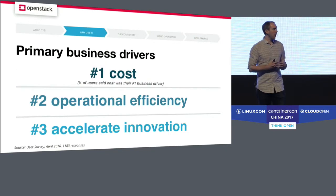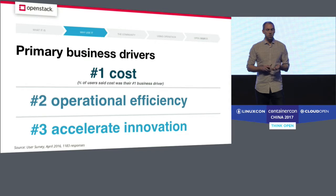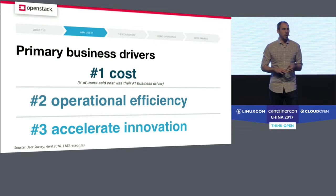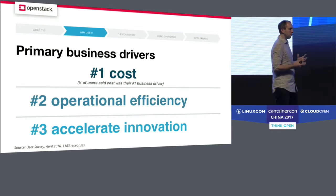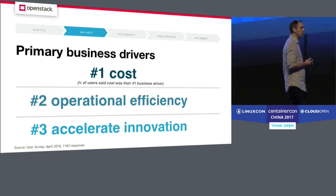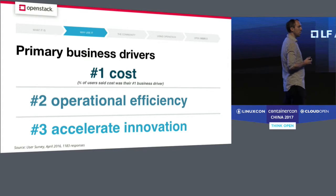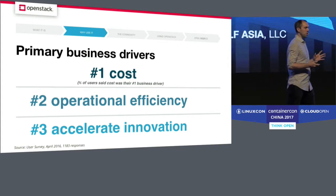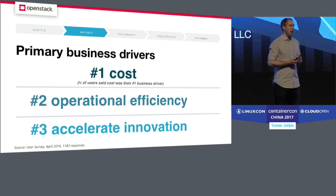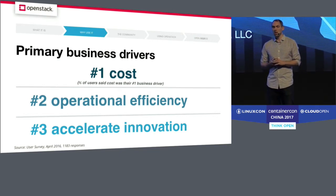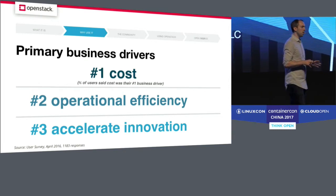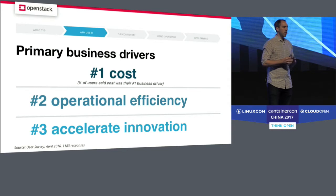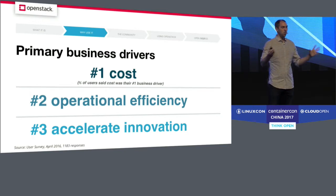When we ask people why they use OpenStack, these are the top three reasons that they tell us. They're able to reduce their costs, they're able to be more efficient in their operations, and they're able to move faster. And as we heard from some of the previous speakers, that last one is especially important in today's economy. It's something that is on the minds of everyone in business and really in every organization — how do you go faster and accomplish your goals more quickly? Software has become a really key part of meeting all of our organization's goals.